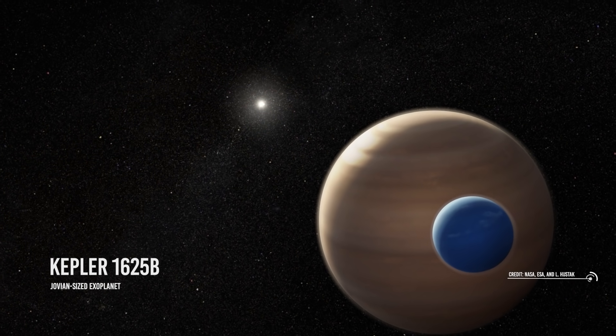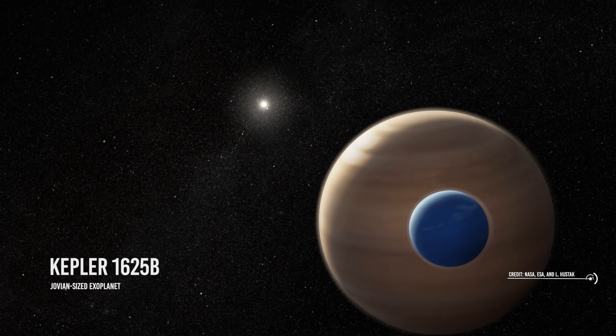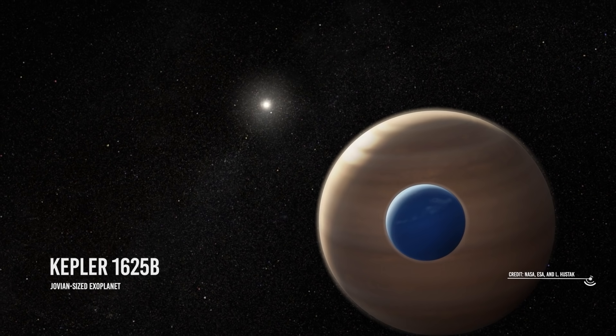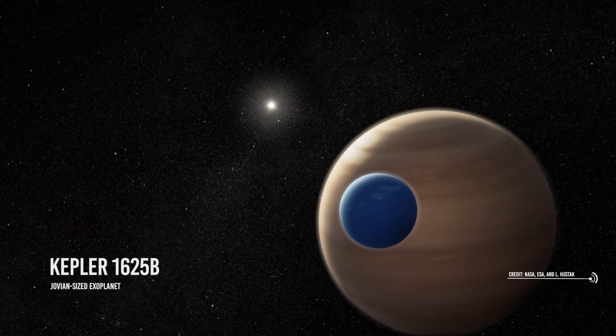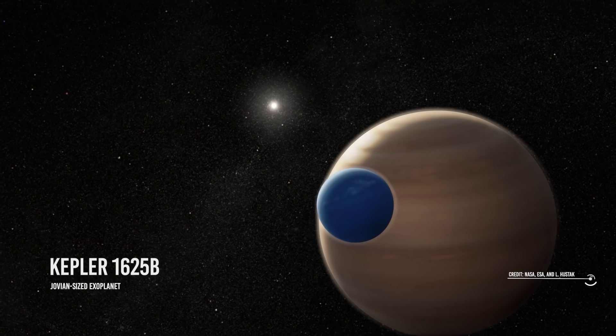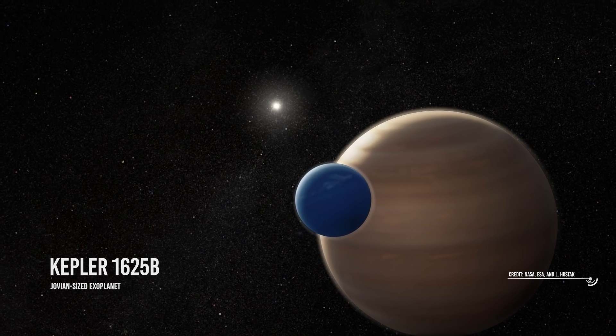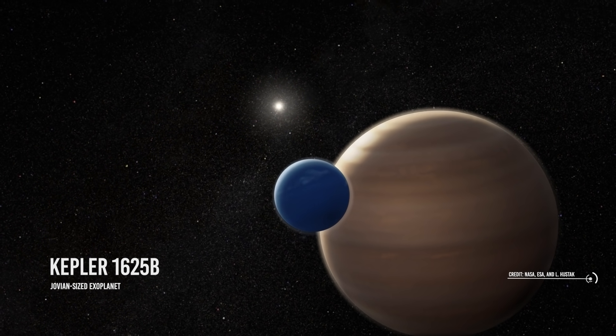In the case of Kepler-1625b, astronomers then used Hubble, more powerful than Kepler, and in 2017 they found a secondary minimum of 3.5 hours after the transit of the planet, an event that, according to Kipping, could be justified only by the presence of a large exomoon.